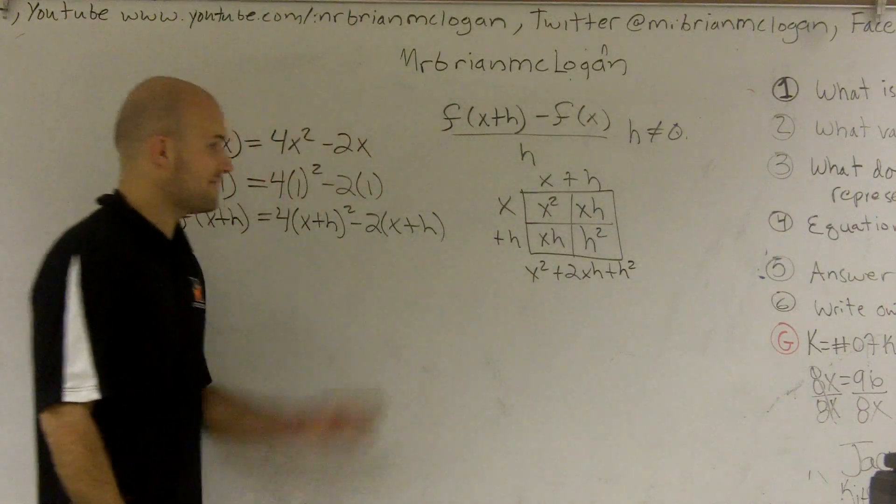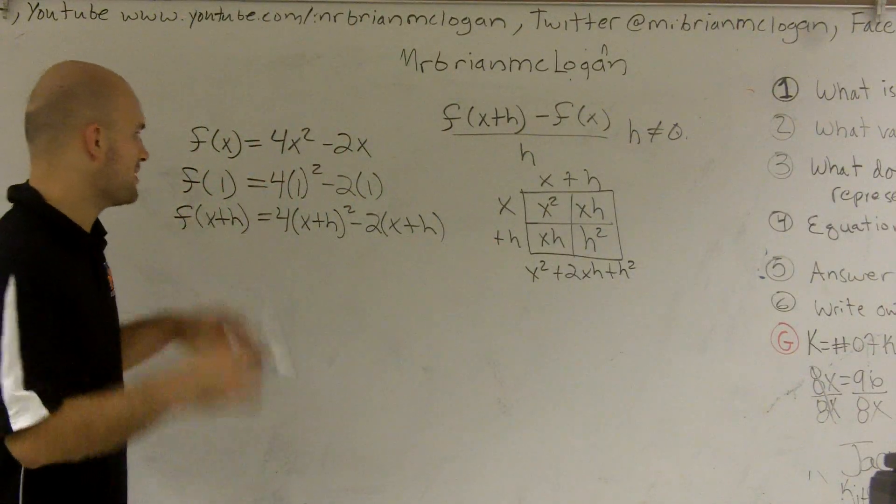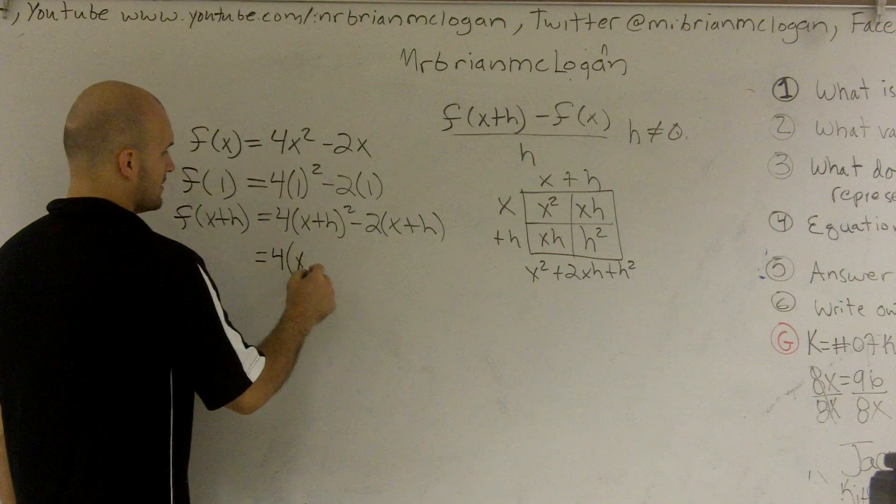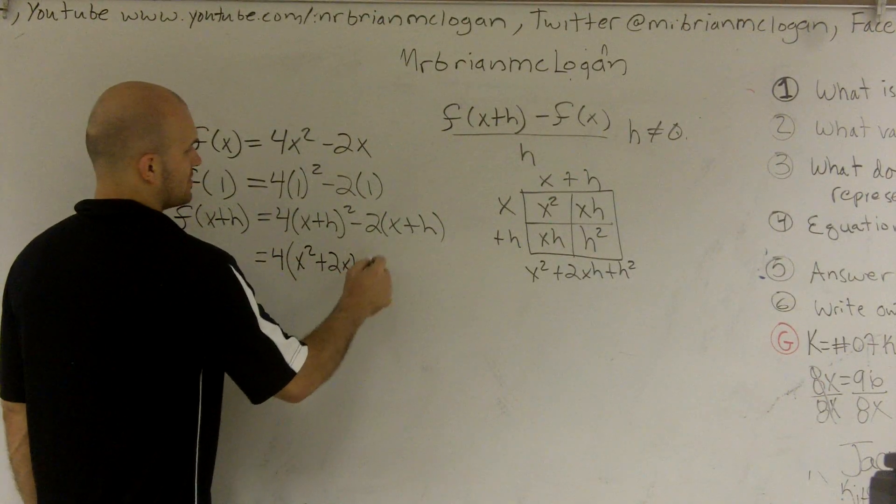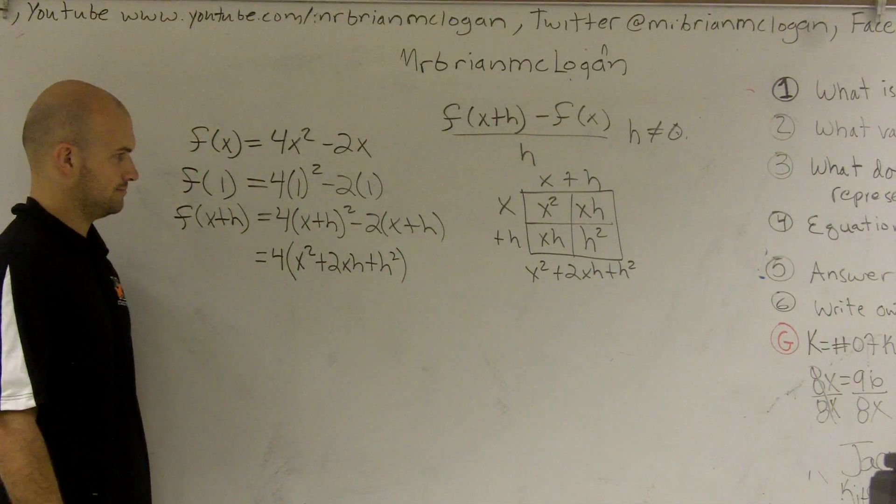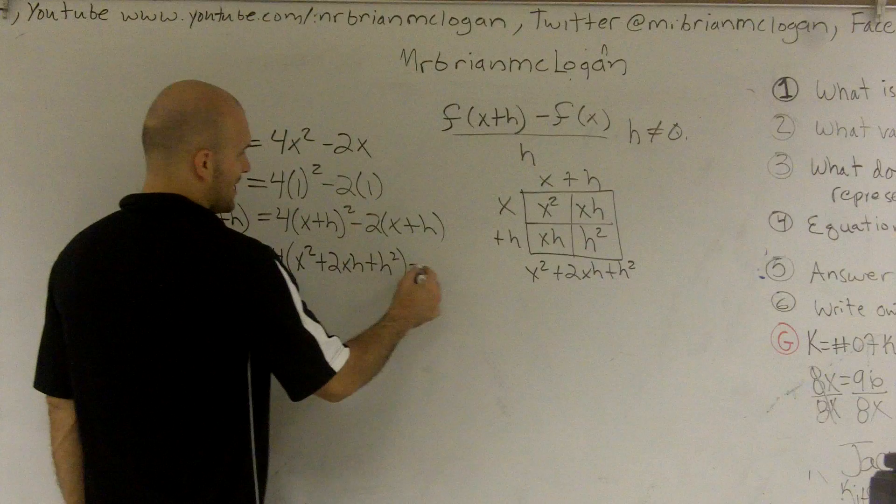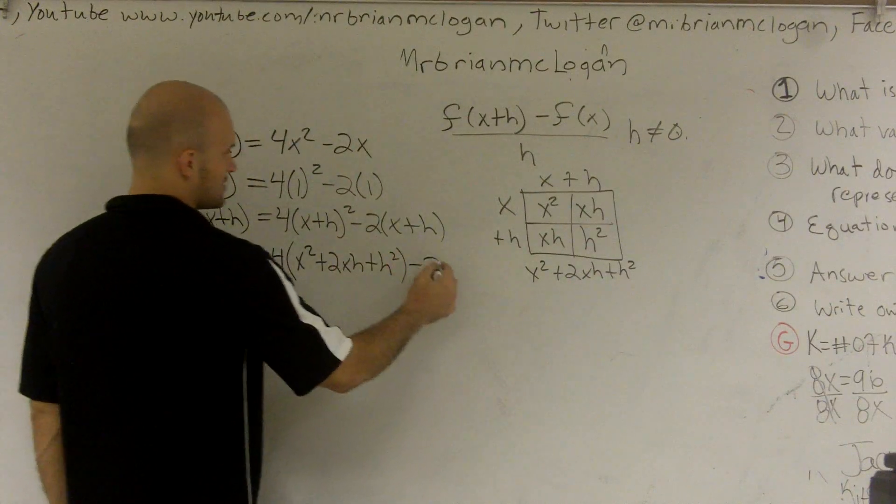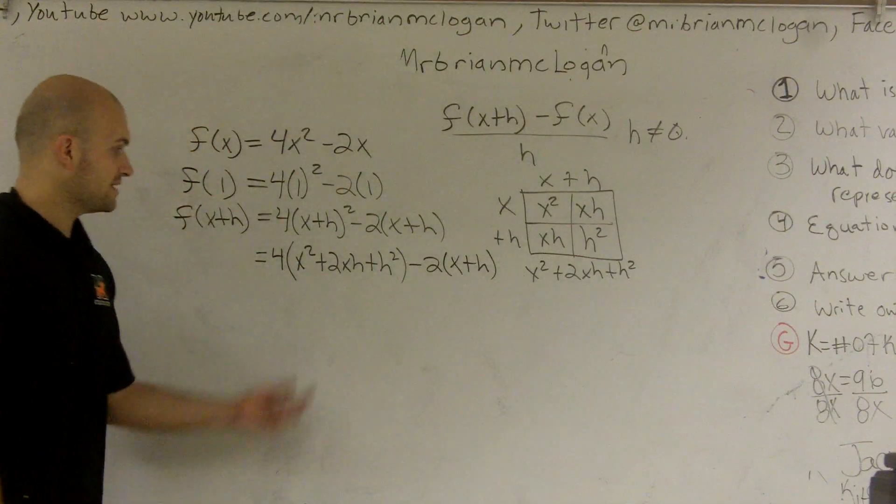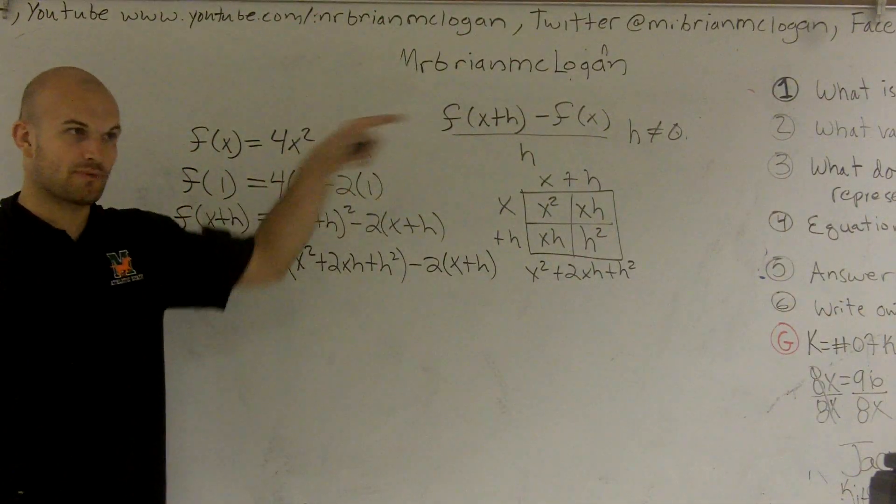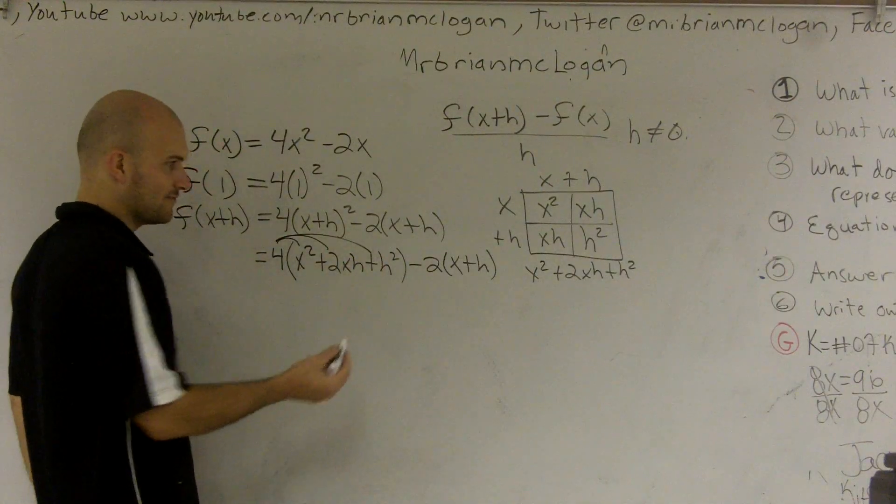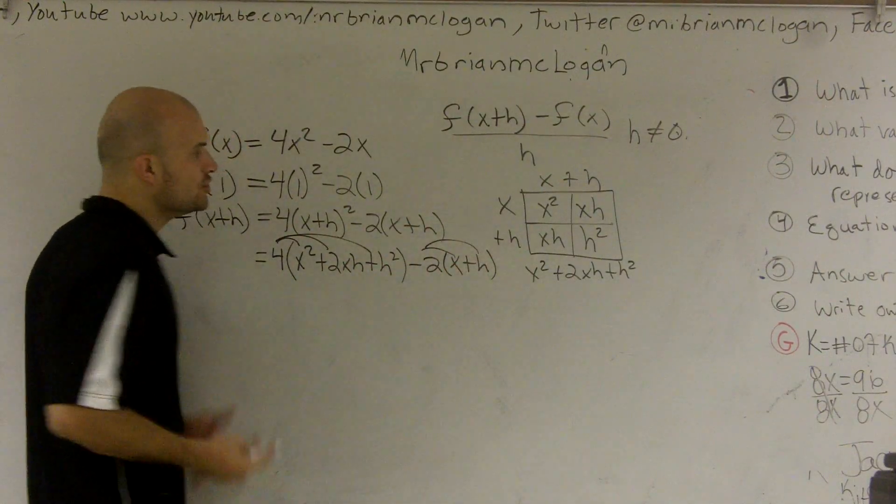Alright, so when I factor that binomial, or when I expand that binomial, I now get 4 times (x squared plus 2xh plus h squared). So minus, now, let's just rewrite this, 2(x+h). Now what I have is, I can now do my distributive property, right? This is like a lot of steps. But the steps, hopefully, you can follow. There's nothing new we're doing.